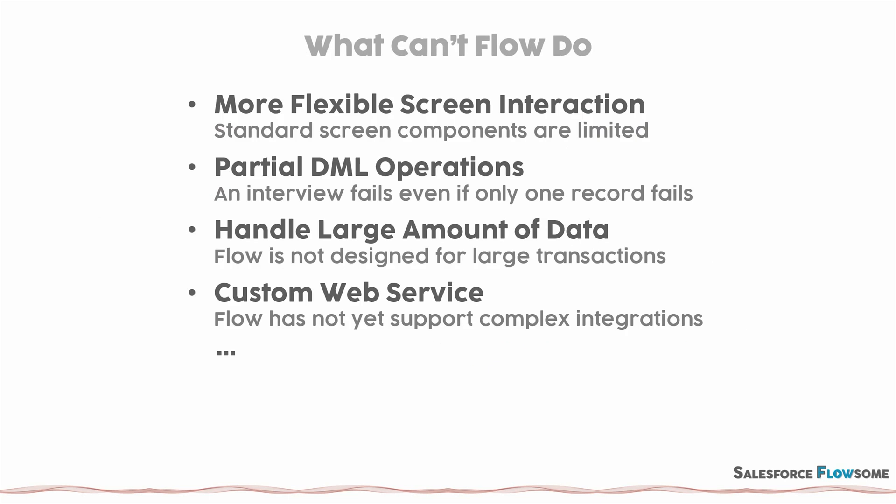I think I have done speaking all the good things about flow. But to become a flow master, it's also really important to understand the limitations of flow — mainly what flow cannot do. The first thing is flow couldn't provide more flexible screen interaction. As of now, the standard screen components are quite limited, so if you want real-time interaction between different components, you will have to leverage the custom component solution. The second thing is the partial DML operation. In Apex we have partial DML operations, meaning you can successfully update some records even though the rest fail. For example, if you are updating 100 records and 10 of them fail, you can still ask the system to update the rest of the 90 records. However, that option doesn't exist in flow — if there is any failure, the whole operation will fail.